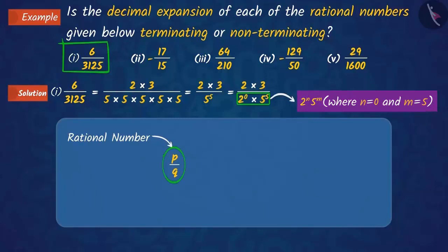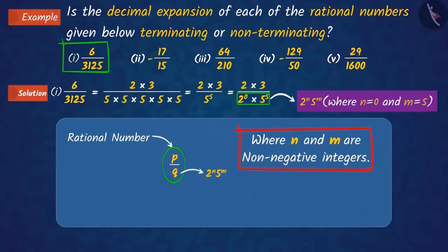In our previous video, we learnt that in a rational number p upon q, if q is in the form of 2 raised to n into 5 raised to m, where n and m are non-negative integers, then the decimal expansion of the number is terminating.